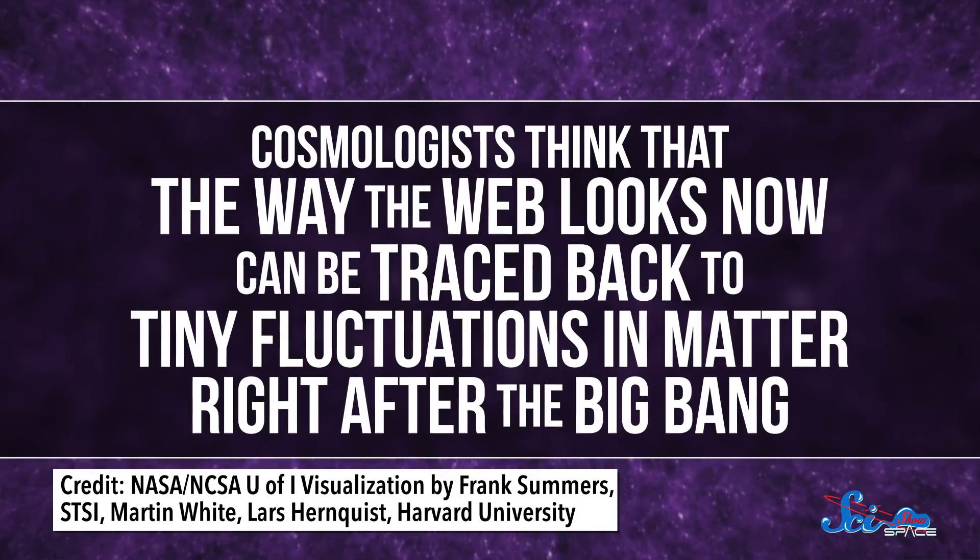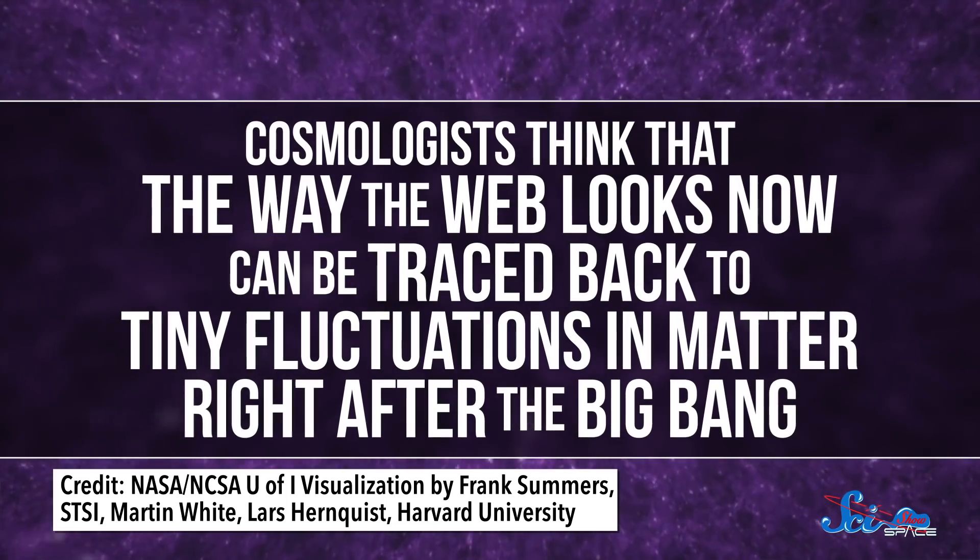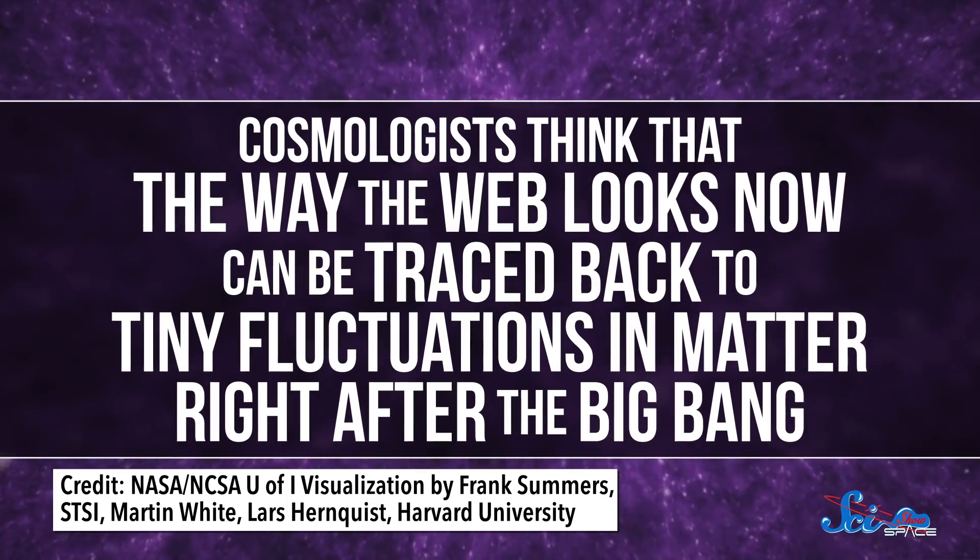And this structure is potentially a really important clue to the past. Cosmologists think that the way the web looks now can be traced back to tiny fluctuations in matter right after the Big Bang. So the better we can map out its structure now, the better we can connect it to conditions in the early universe and find out more about what the universe was like back then. Cosmologists are also interested in using cosmic shear to estimate the total amount of dark matter that's out there, because our simulations of how the universe has evolved rely on knowing what's actually in it. And it could also help us understand the biggest invisible piece of our universe: dark energy.